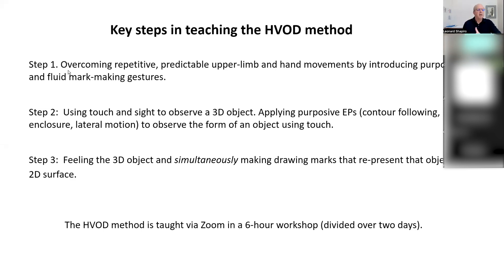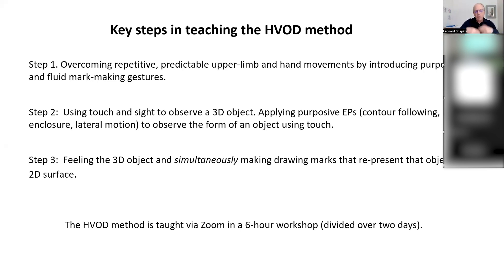The first step is extremely important: we overcome repetitive and predictable upper limb — that is, arm and hand — movements by introducing, through some exercises, purposive and fluid mark-making gestures. That's essential because we repeat gestures in our daily lives all the time. In order to make the marks we need to reflect what we're feeling onto the paper, we need to be able to really dance the line out onto the paper.